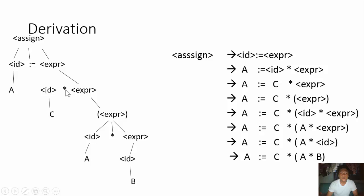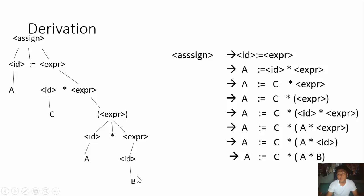A is equal to C times opening close, because of the expression here: opening close A times B opening close. That is the output of our derivation.